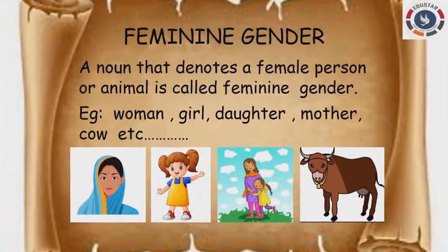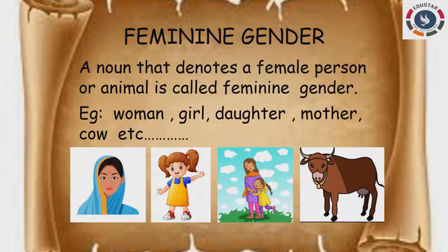The next type is feminine gender. Feminine gender is nothing but it denotes a female person or animal. For example: girl, woman, lady, cow, hen — everything comes under feminine gender, because the noun stands for a female person or animal.